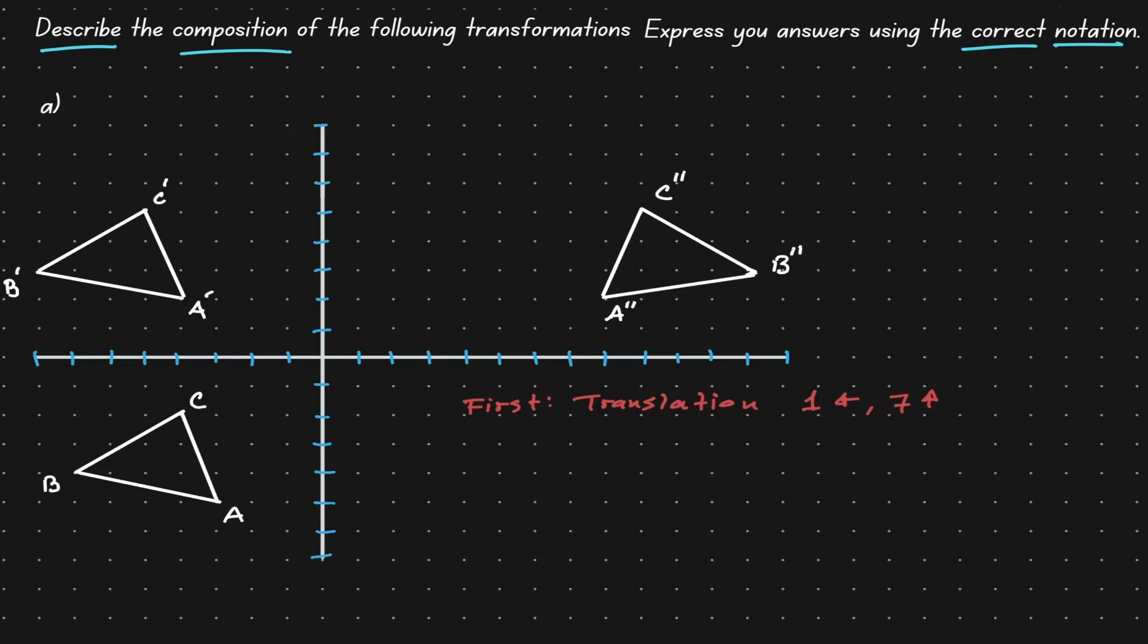What's the movement that we need to do from A' to its reflected position? That would be 12 units to the right. Let's see if this occurs also on the other points in this triangle. What's the movement for us to go from C' to its reflected position?